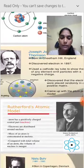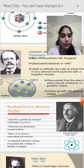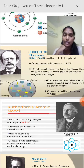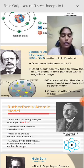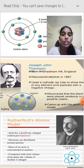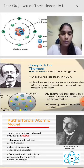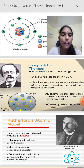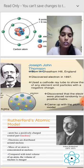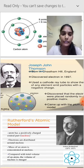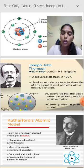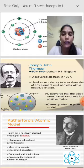The next one is the Plum Pudding Model, which we learned about in ninth class. The Plum Pudding Model theory was discovered by Joseph John Thompson. He was born in Cheetham Hill in England. Thompson discovered the electron in 1897.